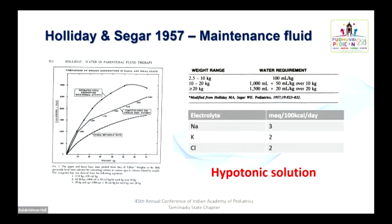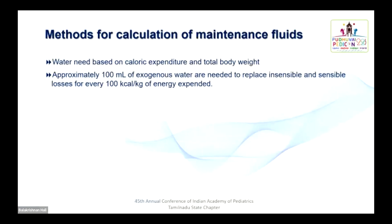In 1957, Holliday and Segar proposed maintenance fluids based on caloric expenditure and weight. They proposed a sodium requirement of 3 mEq, potassium of 2 mEq, and chloride of 2 mEq per 100 kilocalories per day. The suggested fluid is usually hypotonic. Other methods include body surface area and basal calorimetric methods, but for practical purposes, maintenance calculation is based on caloric expenditure and total body weight.